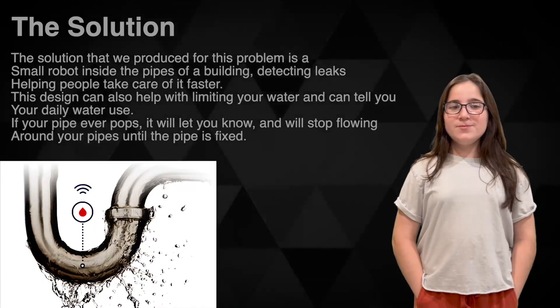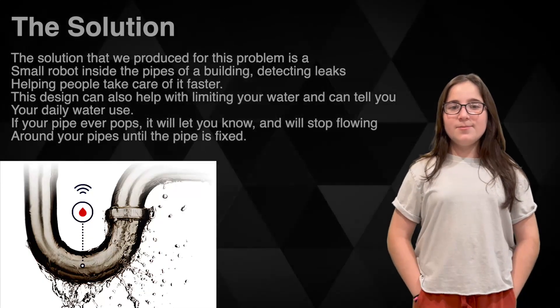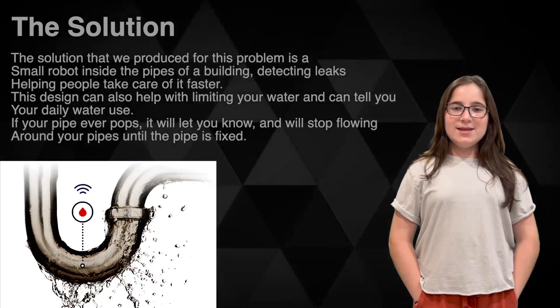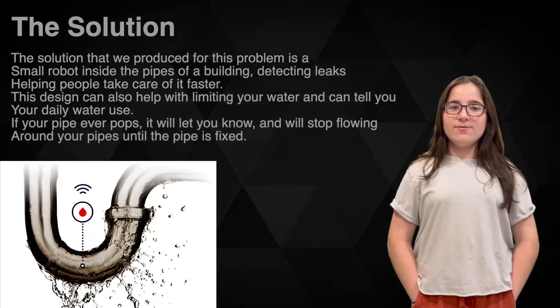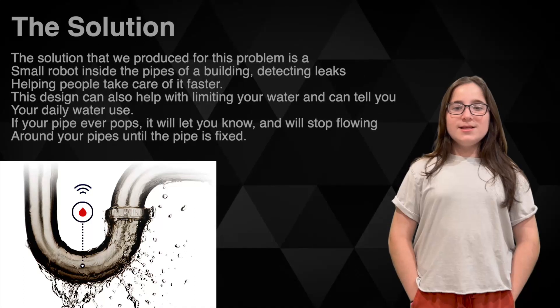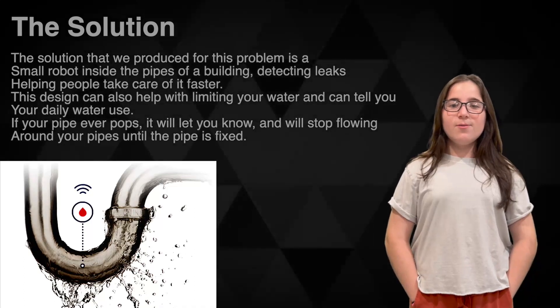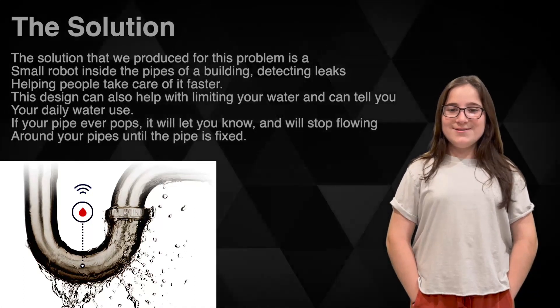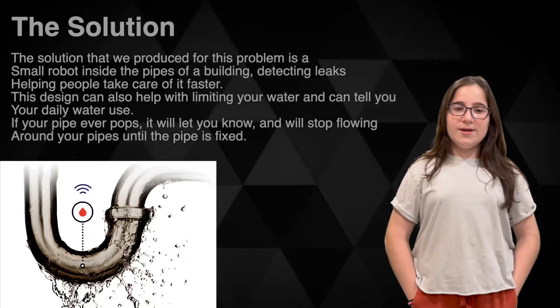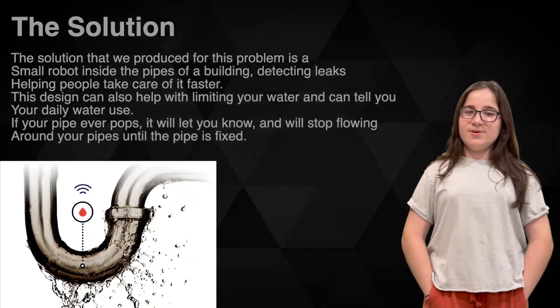The solution that we produced for this problem is a small robot inside the pipes of a building detecting leaks inside the building, helping people take care of it faster before it gets worse. This design can also help with limiting your water and can tell you your daily water use. If your pipe ever pops it will let you know and will stop flowing around your pipes until the pipe is fixed.